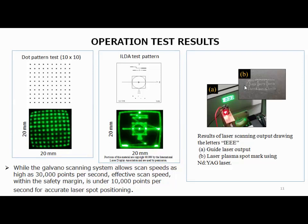This is an operation test of the laser irradiation. The green laser is a DPSS laser used as a guide laser. The galvanometer scanning system allows scan speeds as high as 30,000 points per second; however, the effective scan speed within the safety margin is under 10,000 points per second for accurate laser spot positioning. The left side shows a dot pattern test, and the middle one is the ILDA test pattern. The scratch lines are because the blanking signal was not set, but if a pulsed operating laser is used, these scratches can be ignored.